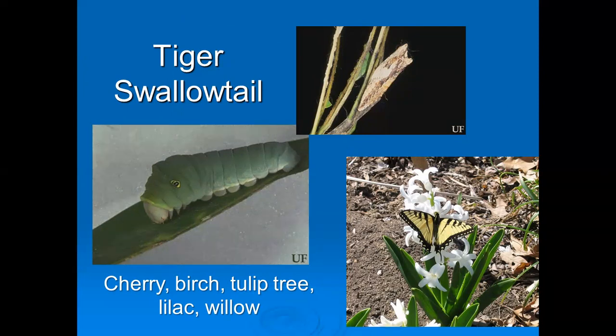The swallowtail loves the hyacinth in early springtime, so bulbs are an excellent source of nectar, particularly early in the year when most everything else is dormant. The tiger swallowtail larvae feed on cherry, birch, tulip tree, lilac, and willows. They're hard to find because they blend in so well.